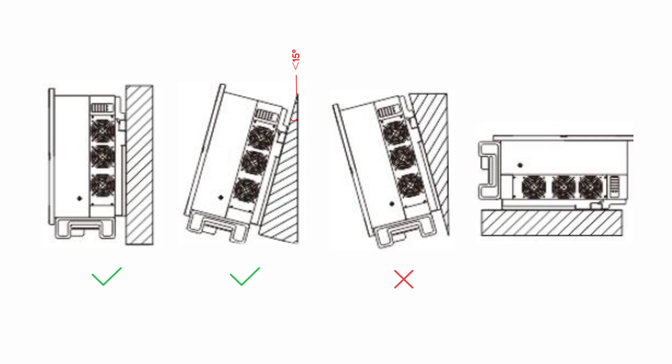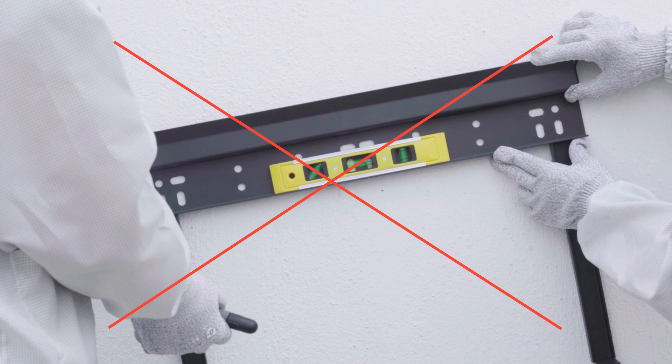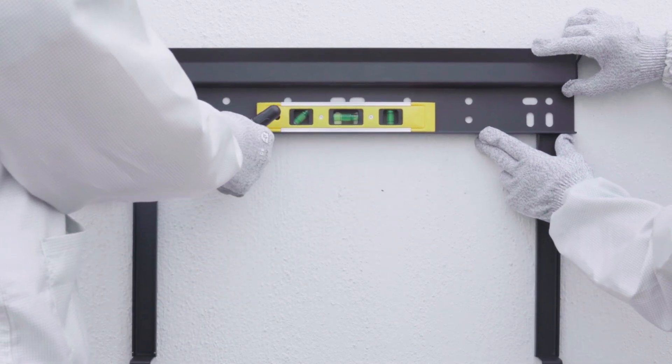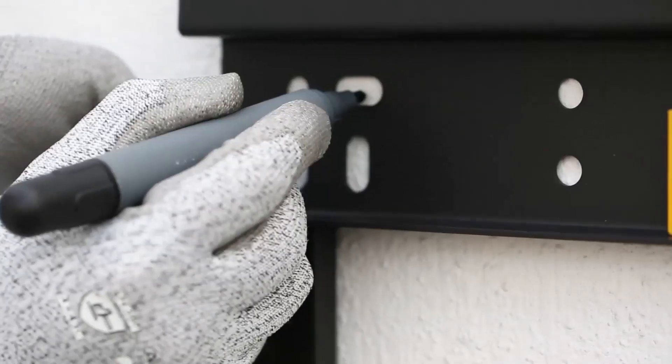Mount the inverter on a vertical wall. Position the wall bracket horizontally. Use the wall bracket as a drilling template and mark the positions of the drill holes.